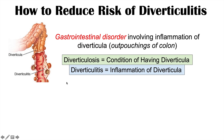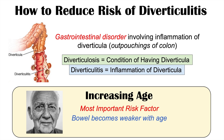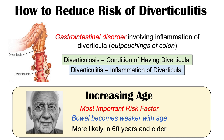The first and most important risk factor for getting diverticulitis is increasing age — and unfortunately, it's one we cannot change. As we get older, our bowel becomes weaker. The walls of your large intestine become weaker, and these little pouches can pop out because the bowel wall becomes weak. It's more likely to occur in patients who are 60 years of age and older, but it can occur in younger patients as well.